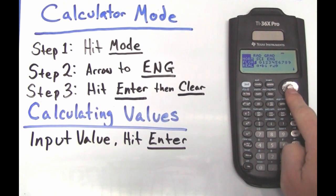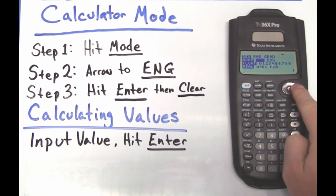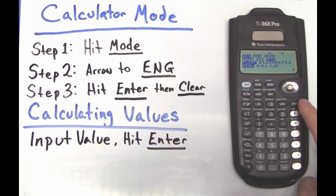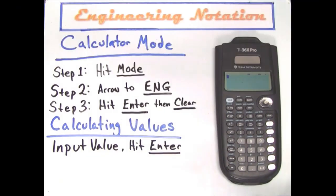Step 2. Use the arrow pad and arrow over to the ENG so it is highlighted. Step 3. Hit the enter button to select engineering notation mode, and then clear to begin calculating. It's that simple.